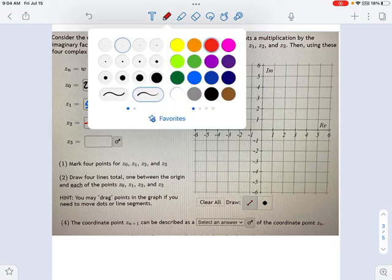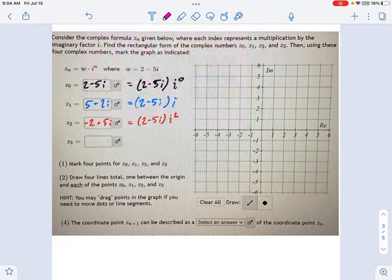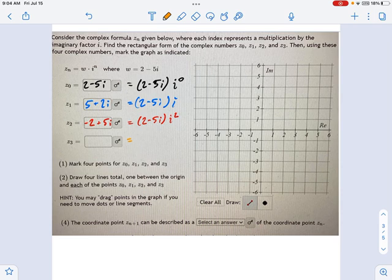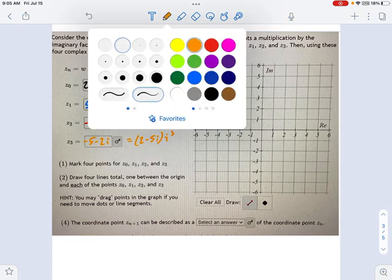And this very last one, I hope I'm picking colors that show up well. That won't. Let's do orange. This very last one is going to be 2 minus 5i times i cubed. Well, i cubed, if you remember, is negative i. So it's going to be the negative version of z1. This will be negative 5 minus 2i. So now let's plot all these things on the graph and see what we're going to end up with here.